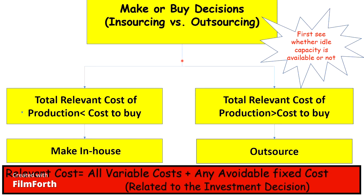Whenever we come across a situation where we have to decide whether we should make a product in-house or whether we should buy it from outside — that is, outsource it — there are certain very important factors which we have to consider. The first is we have to see whether idle capacity, also meaning unutilized capacity, is available or not. Total relevant cost of production should be less than the cost to buy. If it is less, then we make it in-house because otherwise there is no profitability.